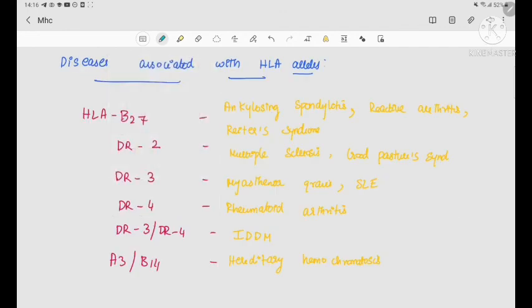Now let's see the diseases associated with HLA alleles. First, diseases associated with HLA B27, which are ankylosing spondylitis, reactive arthritis, and Reiter's syndrome. Associated with HLA DR2 is multiple sclerosis and Goodpasture syndrome. Associated with HLA DR3 are myasthenia gravis and systemic lupus erythematosus. Associated with DR4 is rheumatoid arthritis. With DR3 or DR4 is insulin-dependent diabetes mellitus, and with HLA A3 or B14 is hereditary hemochromatosis. These are all the diseases associated with HLA alleles.